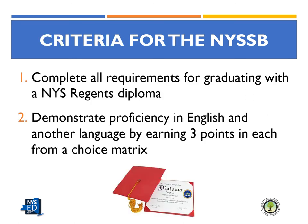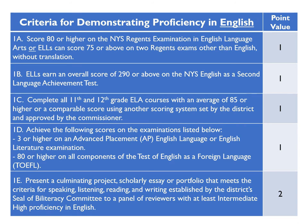Let's now review the criteria for a student to earn the New York State Seal of Biliteracy. A candidate must complete all requirements for graduating with a New York State Regents diploma and must earn three points in English and three points in one or more other world languages according to the criteria set forth in the handbook. Here is the point matrix for English — students must earn a total of three points using any combination of the listed criteria, each with its corresponding point value.